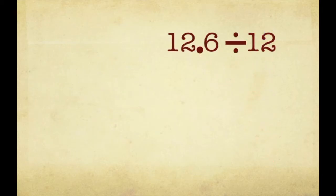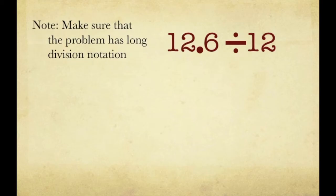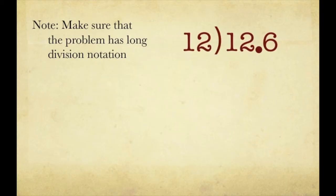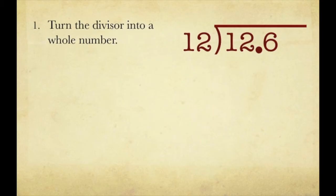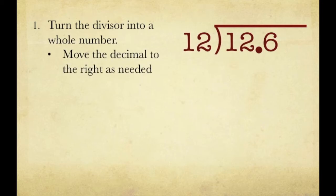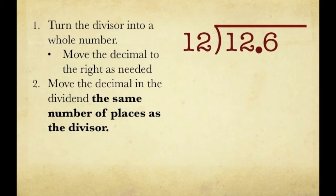How about 12.6 divided by 12? Remember, you have to make sure the problem is in long division notation, however you want to call it — as long as you put it into that notation. So it's going to look just like this. Step 1: turn the divisor into a whole number. Well, 12 is already a whole number — there's no decimal to move. Step 2: move the decimal in the dividend the same number of places as the divisor. How many places did we move the decimal in our divisor? Zero. So we move our decimal zero places and leave it right where it is. Step 3: rewrite the question.